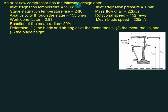An axial flow compressor has the following design data: inlet stagnation temperature T01 is 290 K, inlet stagnation pressure P01 is 1 bar, stage stagnation temperature rise is 24 K, mass flow rate of air is 22 kg/s, axial velocity of flow Vf is 155.5 m/s, rotational speed is 152 rps, mean blade velocity is 205 m/s, and degree of reaction at the mean radius is 50%, so alpha 1 equals beta 2.